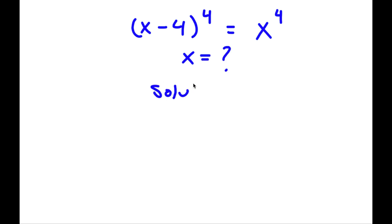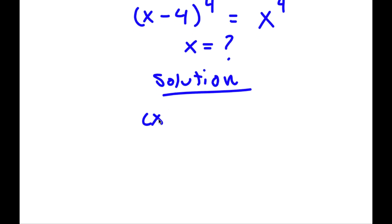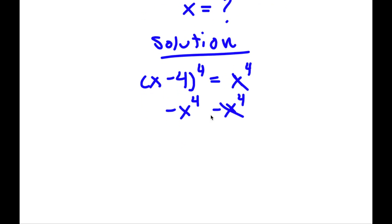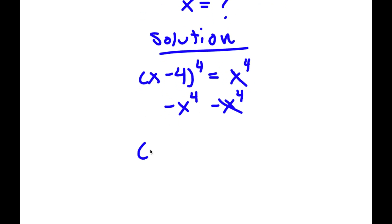For our solution, we start with (x minus 4) to the power of 4 is equal to x to the power of 4. What I'm first going to do is subtract x to the power of 4 on both sides. So on the right hand side these two cancel out, and on the left hand side I have (x minus 4)⁴ minus x⁴, which is equal to zero.